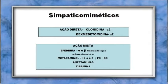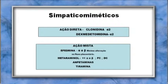Outros simpaticomiméticos que agem nos receptores alfa-2: clonidina e dexmedetomidina, importantíssimas do ponto de vista anestésico, com ação direta sobre receptores alfa-2. De ação mista: efedrina (alfa-beta), que dá mínima alteração no fluxo placentário, sendo bastante utilizada em obstetrícia. Metaraminol tem mais efeito alfa-beta, podendo diminuir frequência cardíaca e débito cardíaco. Outras drogas de ação mista: anfetamina e tiramina. A ação mista age tanto na síntese do neurotransmissor quanto diretamente no receptor.